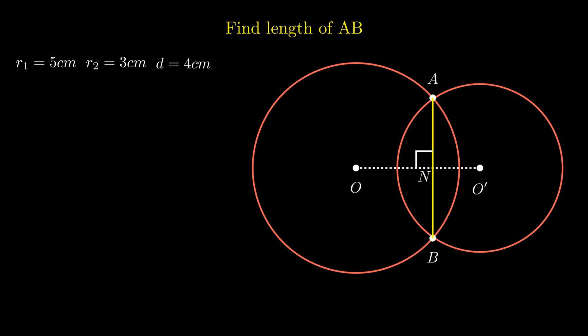Consider a point N on the chord AB such that ON perpendicular AB with reference to the circle with center O. By the application of the theorem, any line perpendicular from the center to the chord bisects the chord.